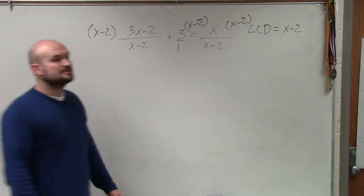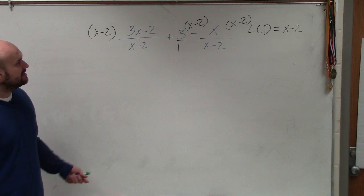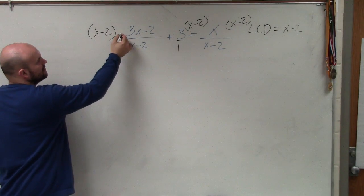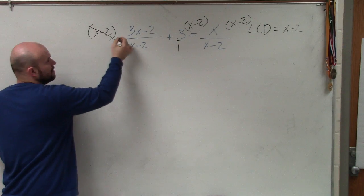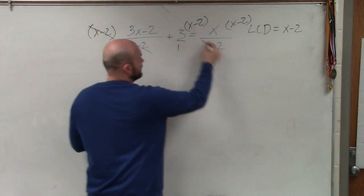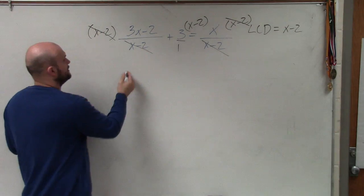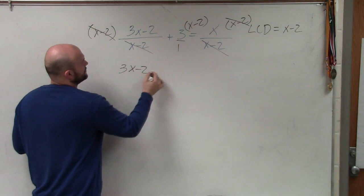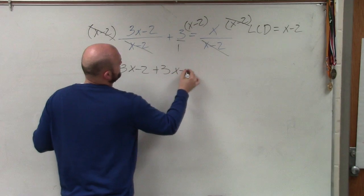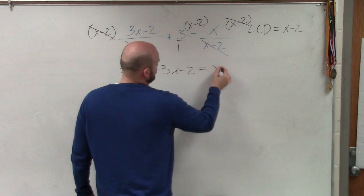So what's helpful about this is, guys, now you see x minus 2 over x minus 2. Those divide to 1. These divide to 1. Now I'm just left with the equation 3x minus 2 plus 3x minus 2 is equal to x.